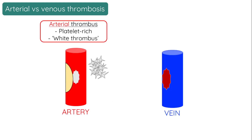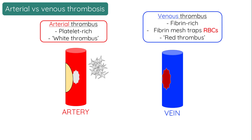In veins, the thrombus is not made largely of platelets, but instead usually consists of a fibrin mesh compacted with red blood cells, and so it is histologically described as a red thrombus.